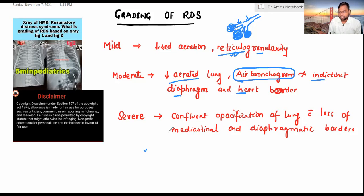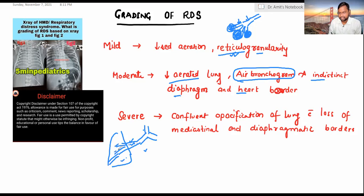What is the meaning of air bronchogram? Suppose this is the trachea, this is the bronchial bifurcation, and further there are terminal bronchi. In this, the proximal part has air present, but the distal part becomes collapsed. This is the meaning of air bronchogram.